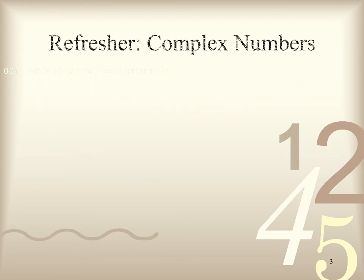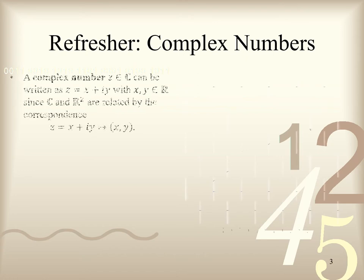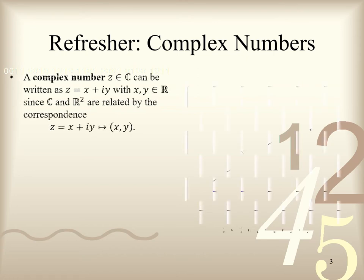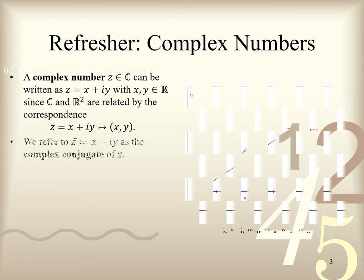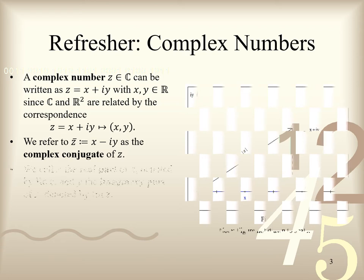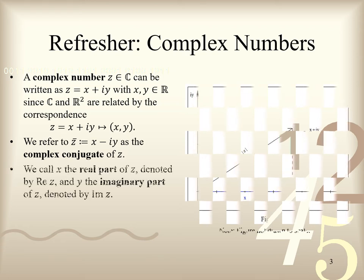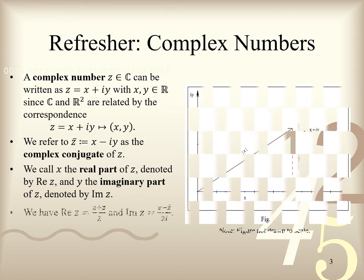Now here is a refresher on complex numbers. A complex number z in the complex plane C can be written as z equal to x plus iy, with x and y real numbers, since C and the Cartesian plane R² are related by the given correspondence. We refer to z bar, which equals x minus iy, as the complex conjugate of z. We call x the real part of z and y the imaginary part of z, and both are denoted as given. One can easily verify that the real part of z equals z plus z bar all over 2, while the imaginary part of z equals z minus z bar all over 2. I leave it to you as a simple exercise.